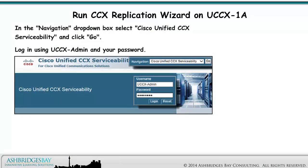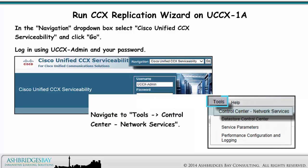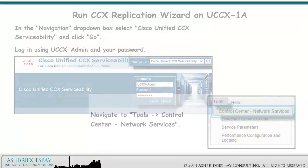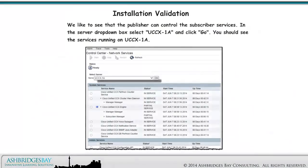In the Navigation drop-down box, select Cisco Unified CCX Serviceability and click Go. Log in using UCCX Admin and your password. Navigate to Tools > Control Center > Network Services. We like to see that the publisher can control the subscriber services. In the Server drop-down box, select UCCX 1A and click Go. You should see the services running on UCCX 1A.